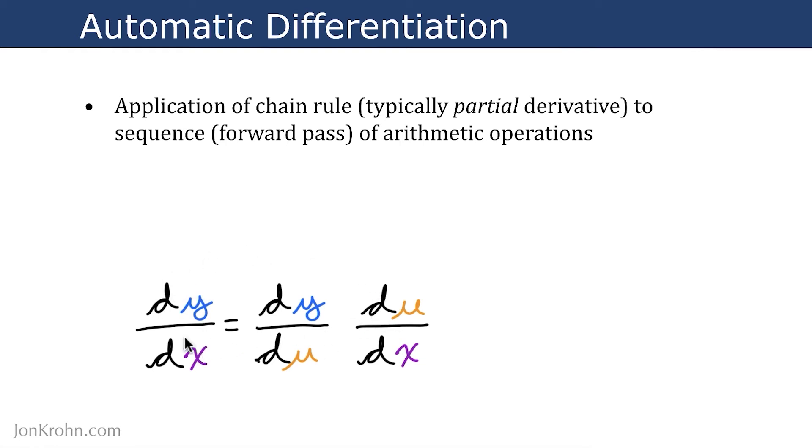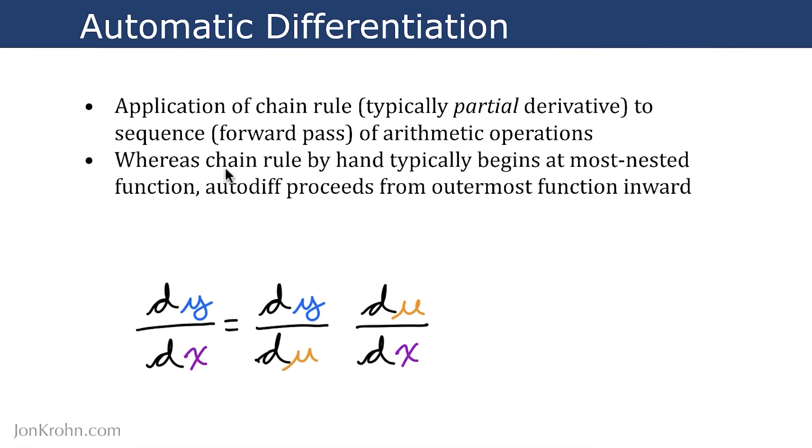So there's a quick refresh of the chain rule. And whereas the chain rule, when we used it by hand in segment 2, we typically began at the most nested function, the innermost function, autodiff proceeds from the outermost function inward. It always proceeds from the outermost function inward, and this is why it's sometimes called reverse mode differentiation.